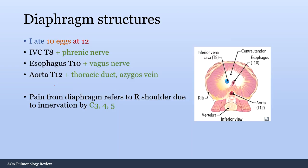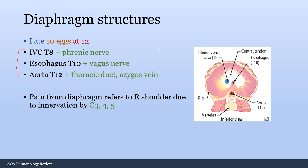For diaphragm structures, use the mnemonic 'I ate 10 eggs at 12': IVC passes through at T8, esophagus at T10, and aorta at T12. Beyond these basics, know the smaller structures: the phrenic nerve passes with the IVC at T8; the vagus nerve passes with the esophagus at T10; and the thoracic duct and azygos vein pass with the aorta at T12. Also know that pain from the diaphragm refers to the right shoulder, due to innervation by C3, C4, and C5.